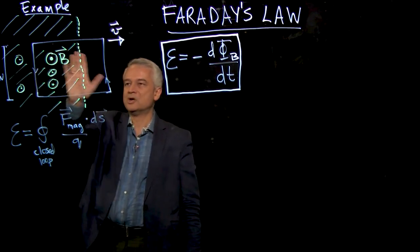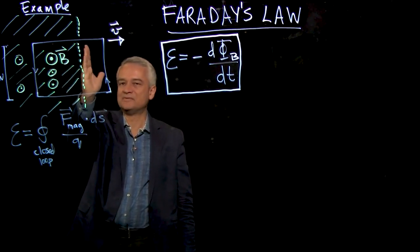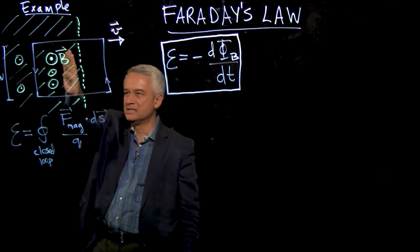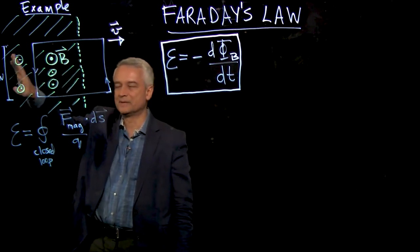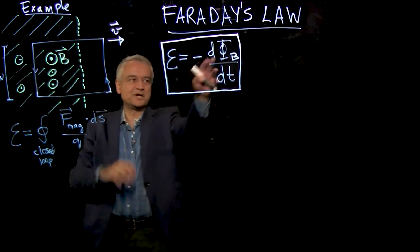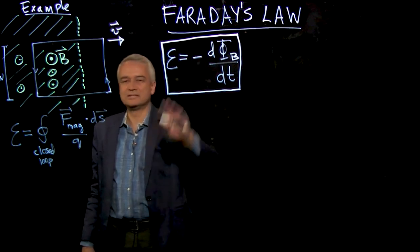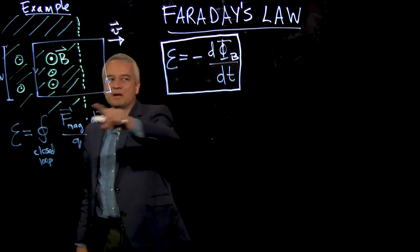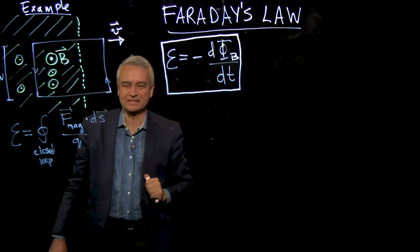So initially, the field is everywhere to the left of this line. A little later, it's everywhere to the left of this line, this line, this line. The field region is moving. Then that's going to change the flux through the loop. And Faraday's law says that in that case, also, the EMF around this loop is minus d flux by d time.